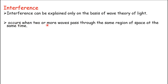Interference occurs when two or more waves pass through the same region of space at the same time. If two waves are in different regions of space, they won't interfere. And if one wave passes and is followed by the other — meaning there is a time delay — again there won't be any interference. For interference to occur, the two waves must pass through the same region of space at the same time.